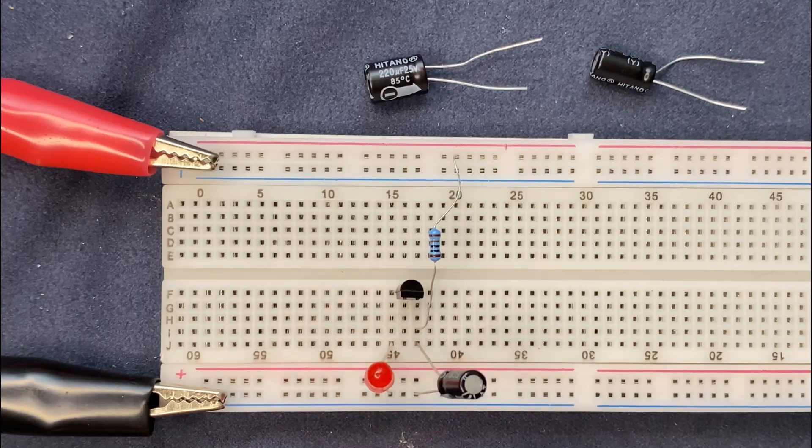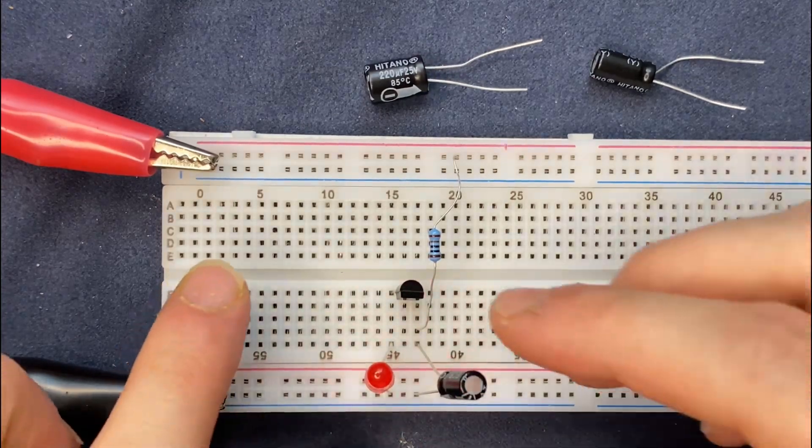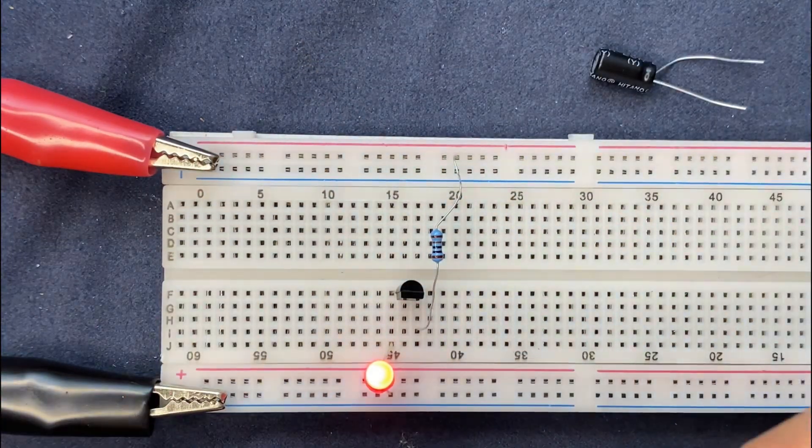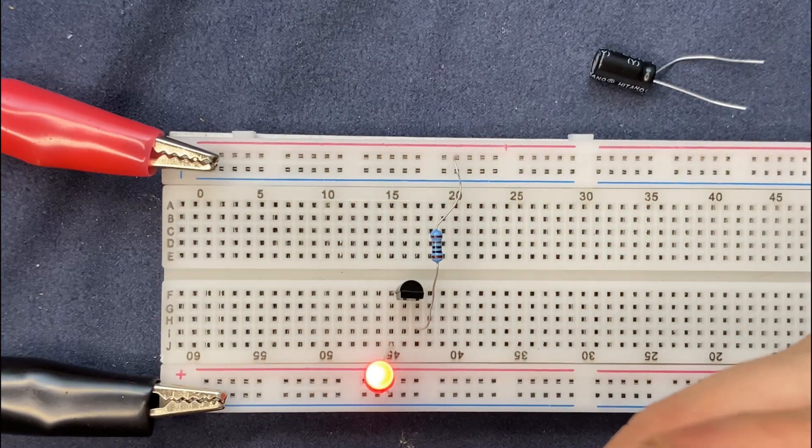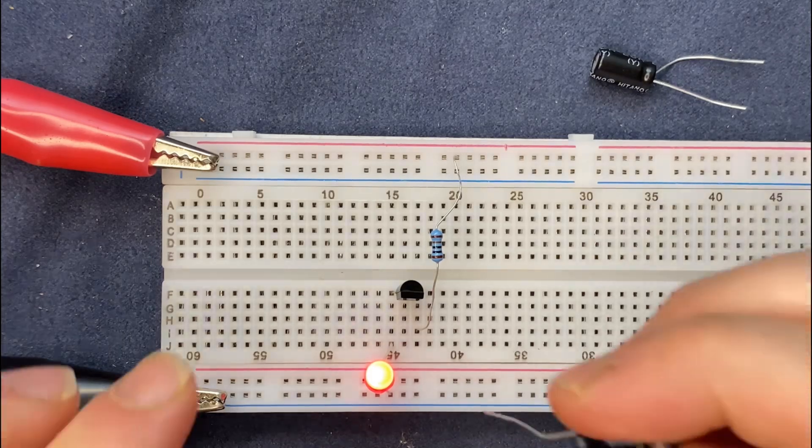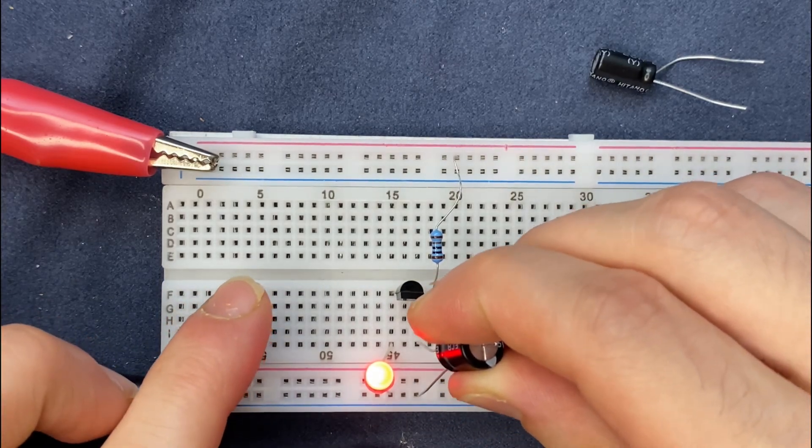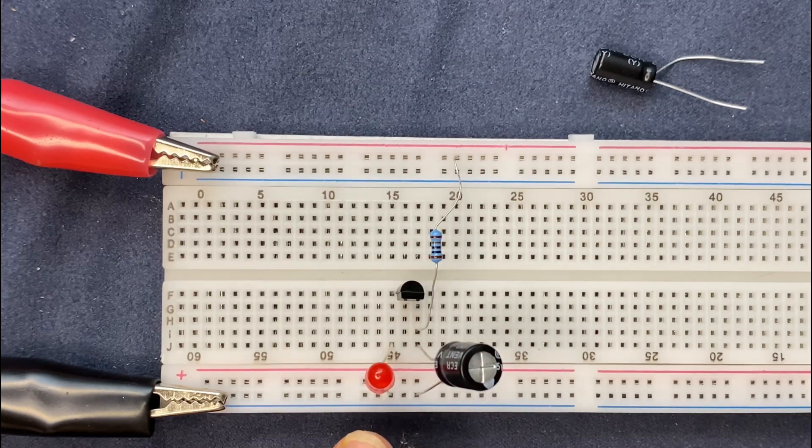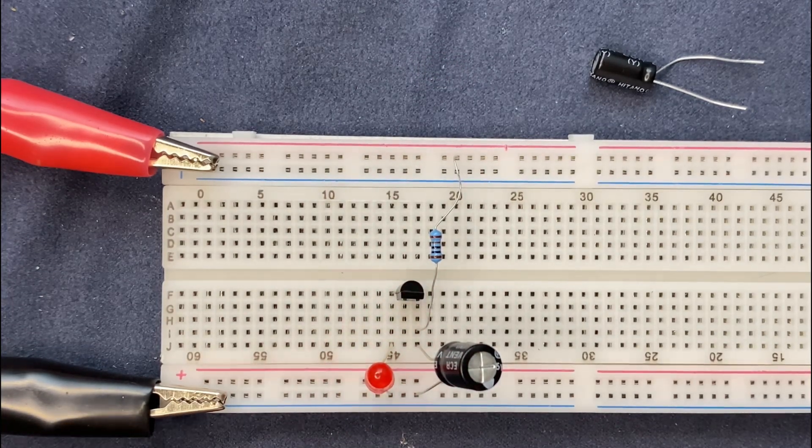It means if I remove the 100 microfarad capacitor and replace it with a higher capacitor 220 microfarad, the LED flashing rate would be slower. As you see the LED flashes much slower than before.